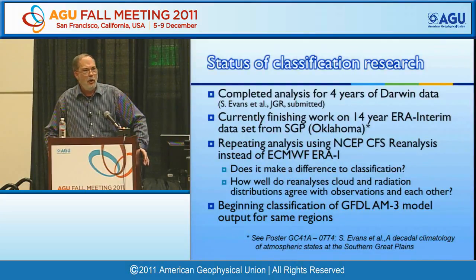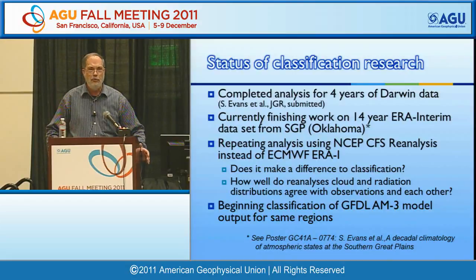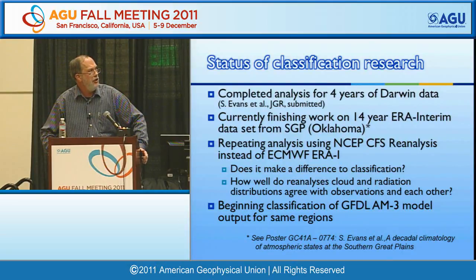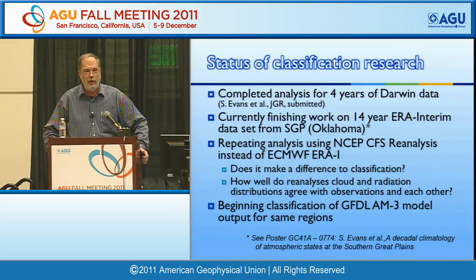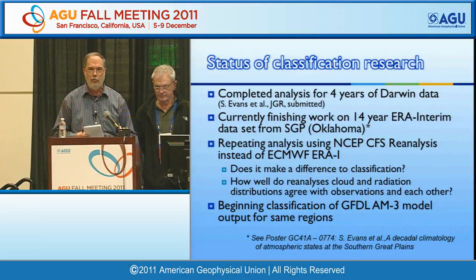We've completed an analysis for four years of the Darwin data — Stuart Evans is first author on a paper submitted to JGR. We're currently finishing work on a 14-year data set from the Southern Great Plains using ERA Interim. We're repeating the analysis using the NCEP reanalysis to ask whether the reanalysis makes a difference, and we're beginning classification of the GFDL AM3 model to look at how it compares with the data. Thank you very much.